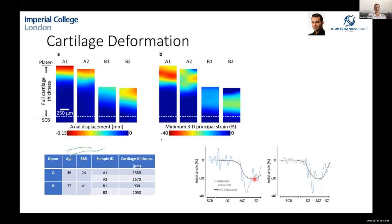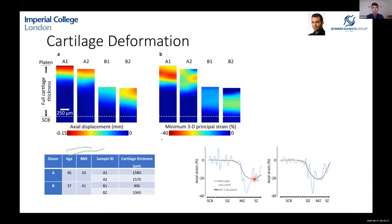Regarding resolution of the mechanical property characterization: for the micro-CT scanning we used around two microns resolution. The DVC technique allows you to optimize the sub-volume box sizes for tracking. Typically the DVC outputs are around 100 microns resolution, but you could optimize down to maybe 30–50 microns — so around the scale of the bone-cartilage interface.